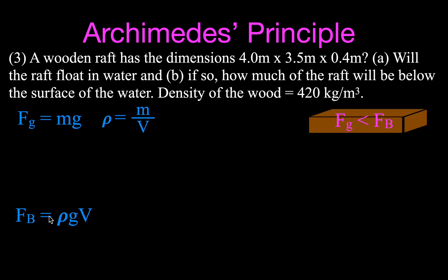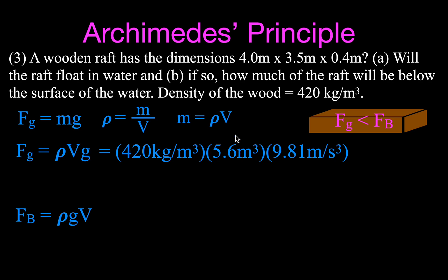We don't have the mass, but we have the density and volume, so the weight equals the density of wood times the total volume times g. The volume is 4 × 3.5 × 0.4 meters, g is 9.81, and the weight of the raft works out to 23,000 newtons.